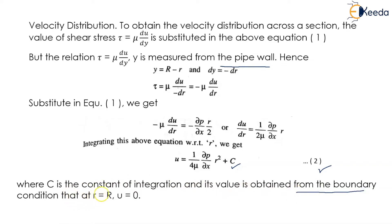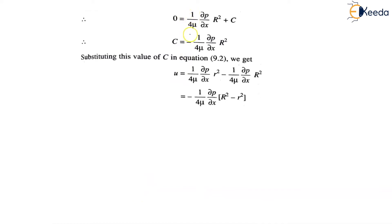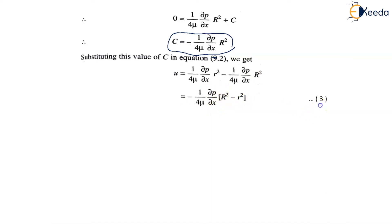Applying the boundary condition: at r equals capital R, u equals 0. So 0 equals 1 upon 4 mu into del p upon del x into R square plus C, giving C equals minus 1 upon 4 mu into del p upon del x into R square. Substituting this value of C into equation 2 we get: u equals minus 1 upon 4 mu into del p upon del x into (R square minus r square). This is equation number 3.